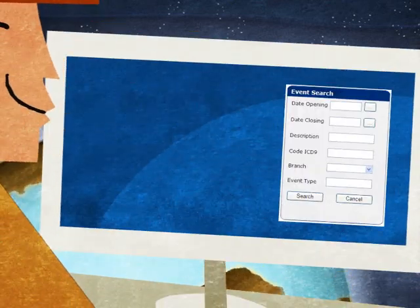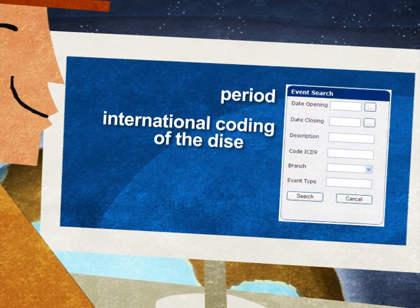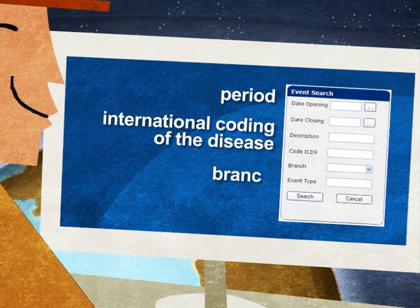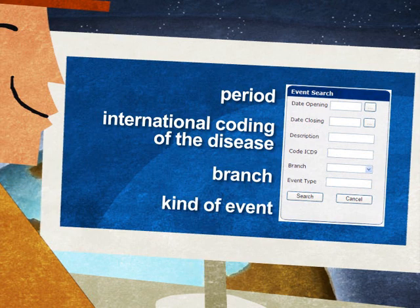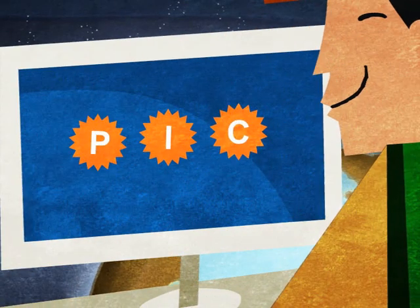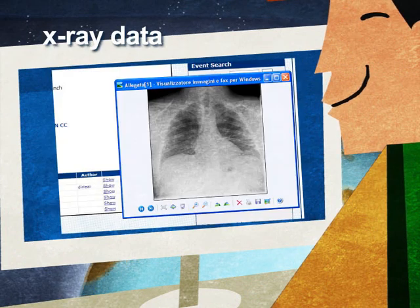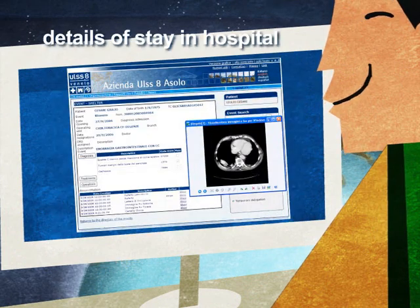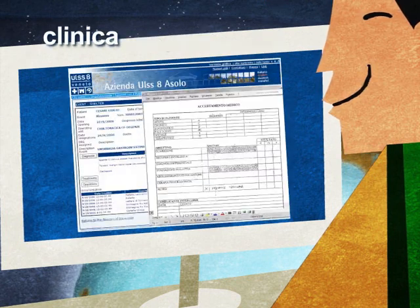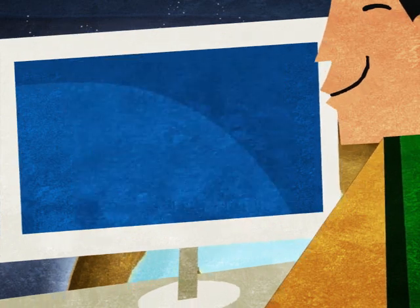Everyone can search their data by period, international coding of the disease, branch, or kind of event. PIC will immediately display the required information: the data of your blood tests, an x-ray, details of your stay in hospital, your clinical file — for example, with the individual graphic presentation chart.